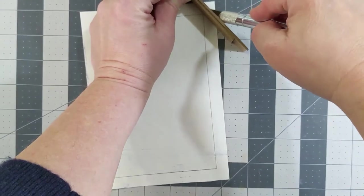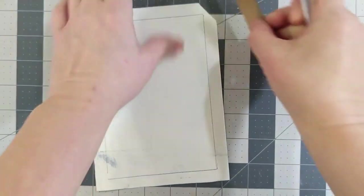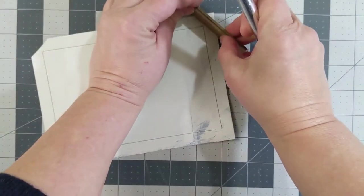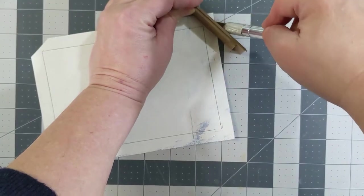Miter the corners using two pieces of book board to give you the distance between where the board is going to lay and the corners.